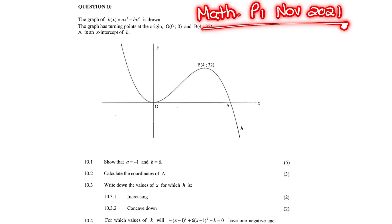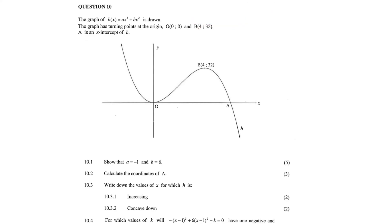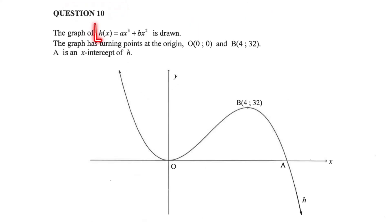We are going on with Mathematics Paper 1 of November 2021. Let us start with question 10. It says, the graph of H(x) equals Ax cubed plus Bx squared is drawn.